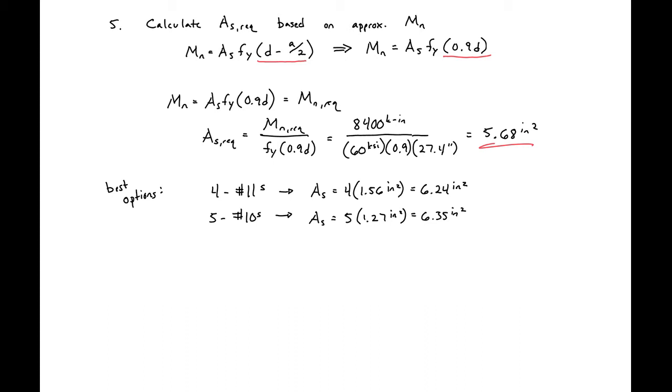We can then use a design aid or just our knowledge of the area of the bars and iteration on different numbers to look for our best option of the size of the bars and the number of bars that will be required. I saw that our best two options would be either four number 11s or five number 10s, so that we can get all our bars in our cross section width. For this example, we're going to use four number 11s and move forward with that.